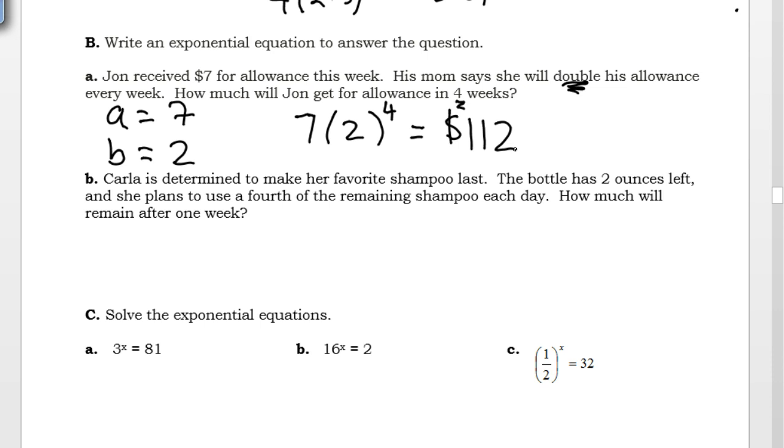Part B says, Carla is determined to make her favorite shampoo last. The bottle has 2 ounces left, and she plans to use a fourth of the remaining shampoo each day. How much will remain after 1 week? Now this one's a little tricky. We know how much we're starting with. We're starting with 2 ounces. But the question doesn't ask how much she's using. The question asks how much is remaining. So we need to think, if she's using a fourth, that means 3 fourths remains.